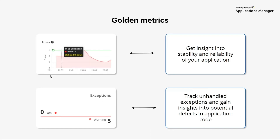Next we have errors. Tracking errors allows you to detect and address issues as and when they arise. By identifying error-prone areas, you'll be able to implement fixes and prevent disruptions to the user journey. The last metric is exceptions. Monitoring exceptions provides insights into potential issues or defects in your application code. Unhandled exceptions can lead to unexpected behavior or downtime, and tracking them helps you detect and resolve these problems promptly. When exceptions occur, tracking them helps you understand the context in which they happen, aiding in identifying the root cause and helping developers pinpoint problematic code segments for debugging.